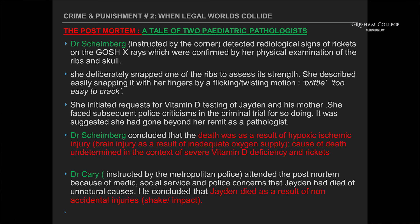Dr Scheinberg concluded that death was the result of hypoxic ischaemic injury — brain injury as a result of inadequate oxygen supply. Cause of death was undetermined in the context of severe vitamin D deficiency and rickets. But that was not the end of the matter — there were two paediatric pathologists. The second, Dr Carey, had been instructed by the Metropolitan Police because of gross suspicions of abuse. He concluded that Jaden had died as a result of non-accidental injuries — i.e. shake and impact. So how can two paediatric pathologists at the top of their game observe the same baby, the same scans, consider the same results, and come to two diametrically opposite conclusions?